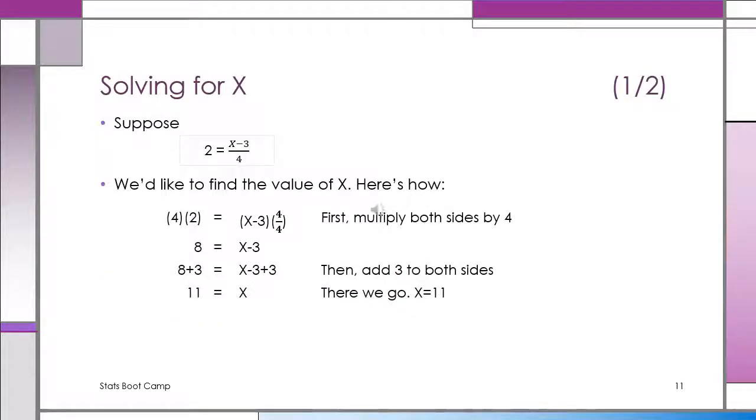Here we have one equation, one unknown. 2 equals (x minus 3) divided by 4. What you got to do is multiply both sides by 4. Now you'll have 8 equals x minus 3. Now you got to bring the 3 over to the other side. So you add 3 to both sides. So now you have 8 plus 3 equals x minus 3 plus 3, which is just x. x equals 11.